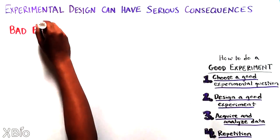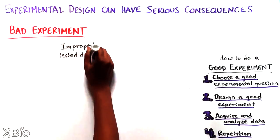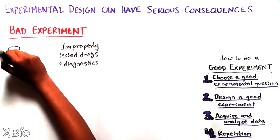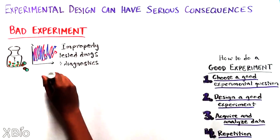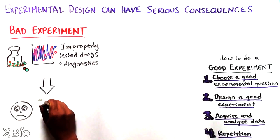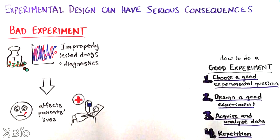There can be very serious consequences if these concepts are not implemented. If decisions on new drugs or diagnostic tests are made using experimental data that haven't properly tested their hypotheses, patients' lives can be affected.